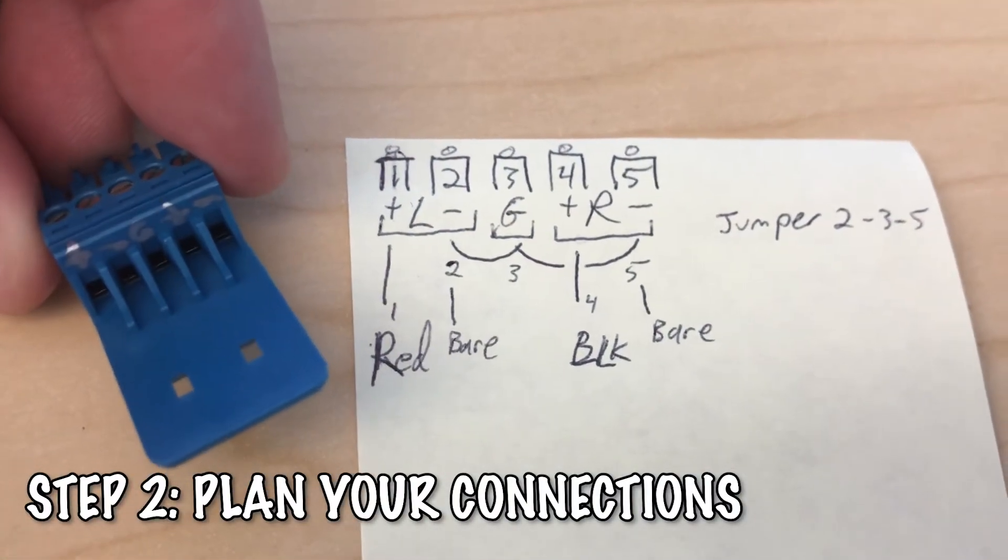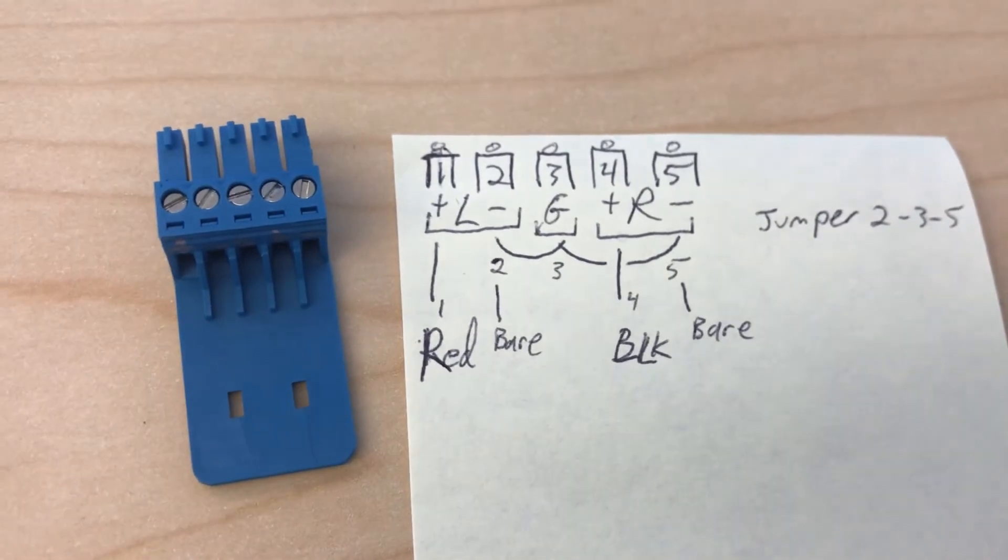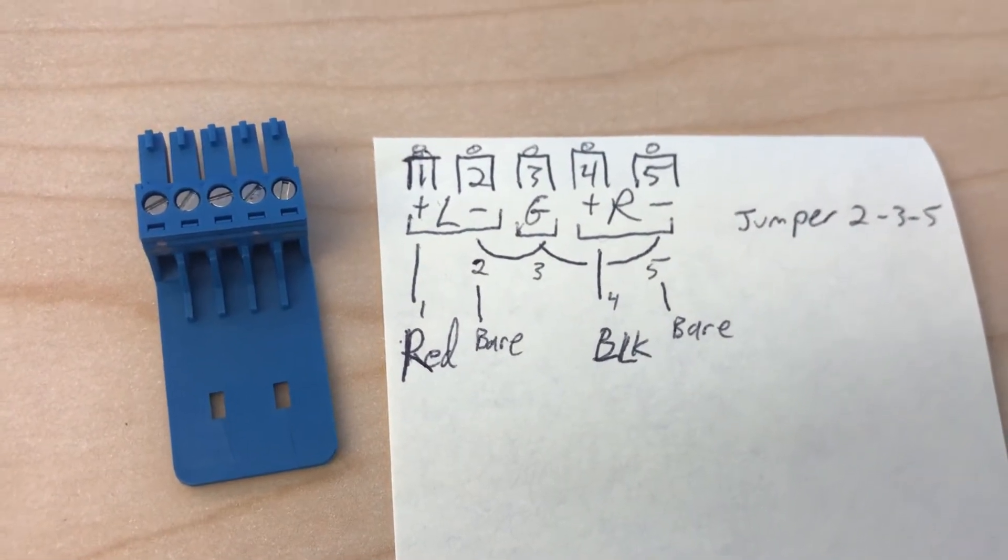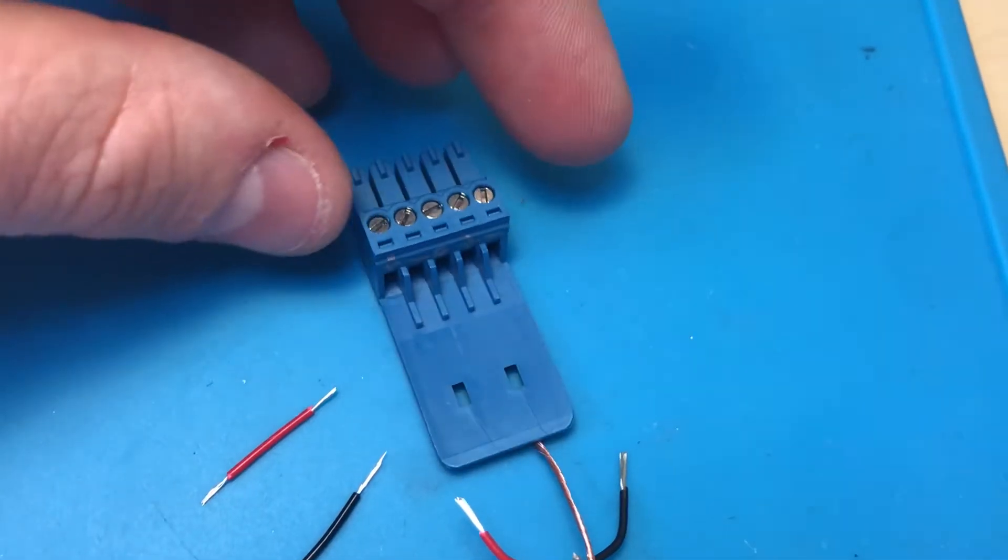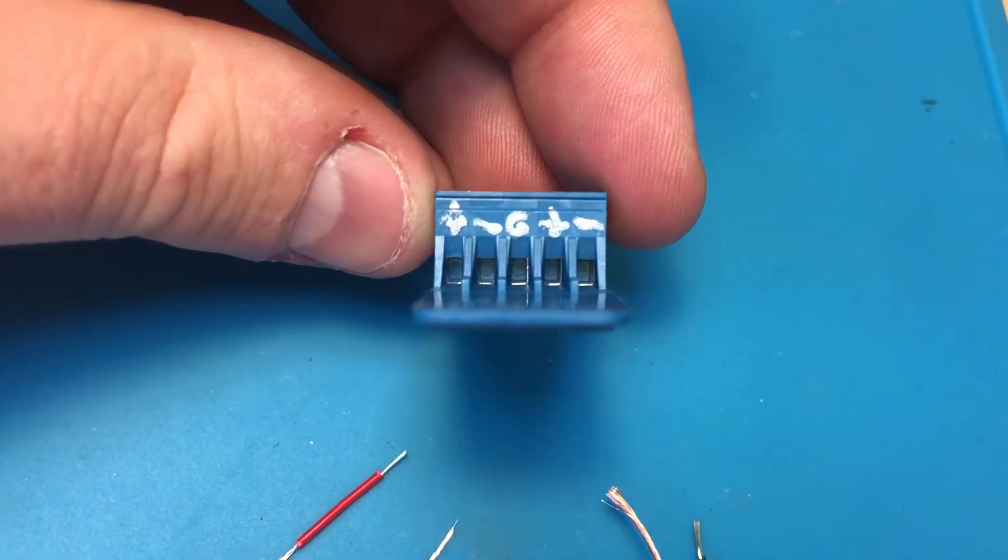Plan your connections on paper. The device should say the polarity of each terminal. On mine, the red wire goes to terminal 1, the black wire goes to terminal 4, and terminals 2, 3, and 5 are ground, so I'll create jumper wires to bridge all three of them.